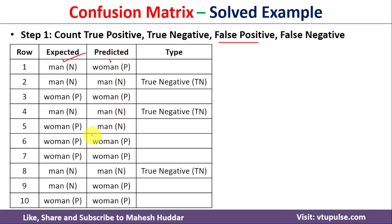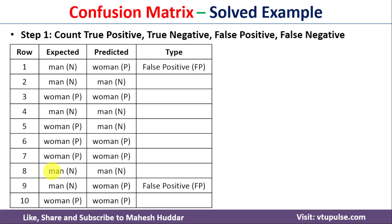Next we find the false positives. False positive means expected is man but predicted is woman. In this data we have 2 cases of false positives.